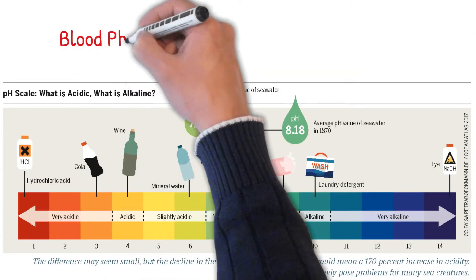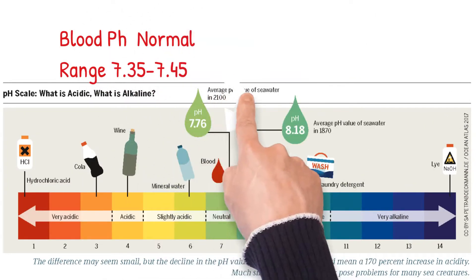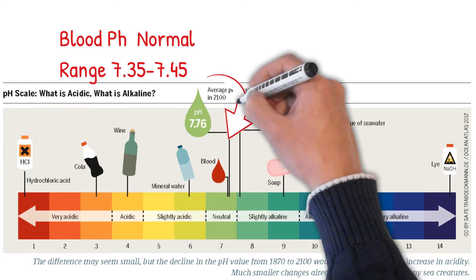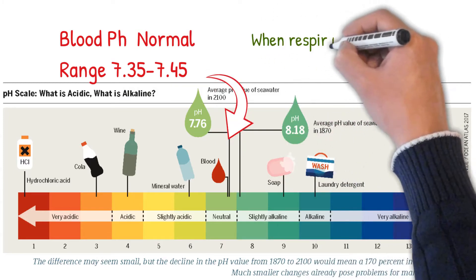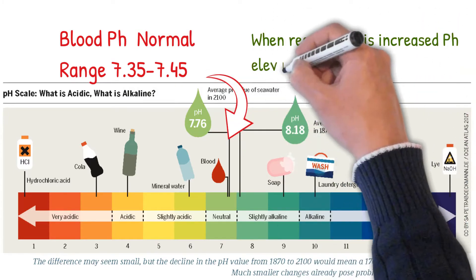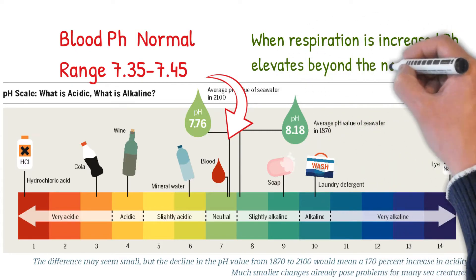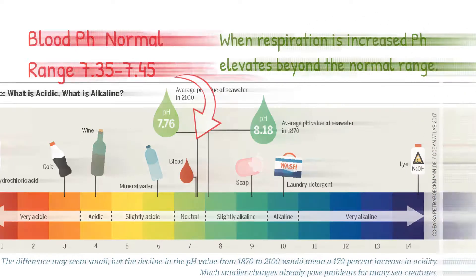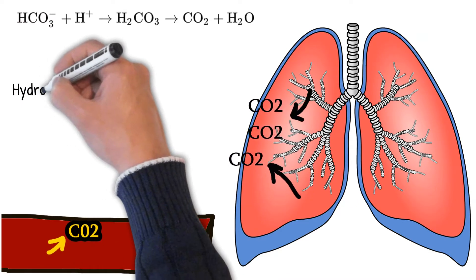Respiratory alkalosis. Alkalosis is the elevation of blood pH. The normal range of pH in the blood is 7.35 to 7.45. When respiration is increased, pH elevates beyond the normal range, because of the reduction of carbon dioxide in the arteries.